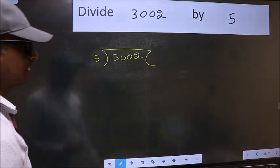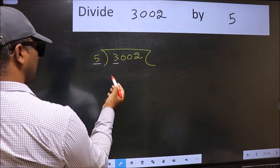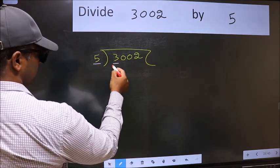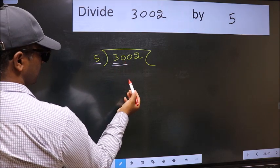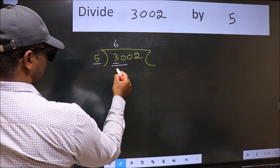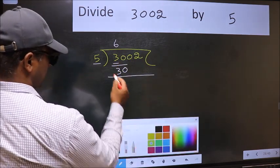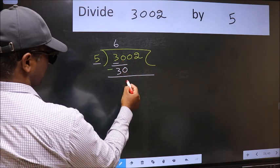Next. Here we have 3 and here 5. 3 is smaller than 5. So we should take two numbers, 30. When do we get 30 in 5 table? 5 times 6 is 30. Now we should subtract. 30 minus 30, 0.